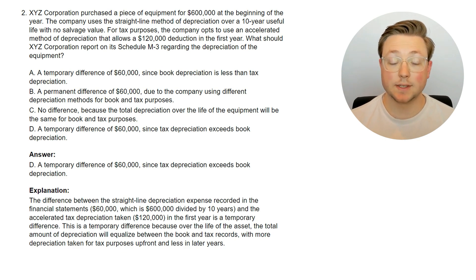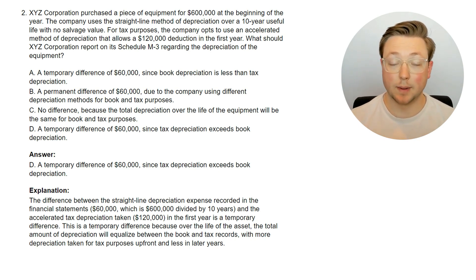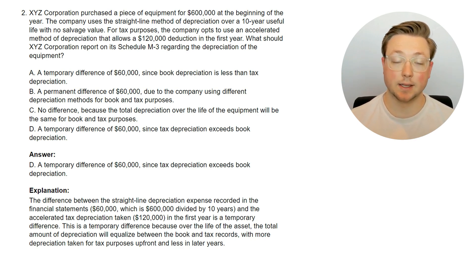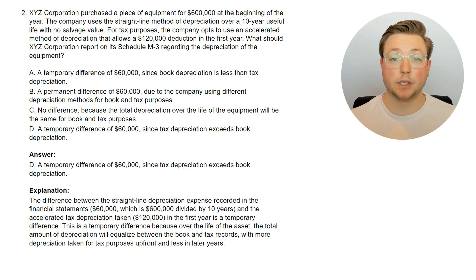The answer is a temporary difference of $60,000 since tax depreciation exceeds book depreciation. In the financial statements, straight-line depreciation was $60,000 — that's $600,000 divided by 10 years — while the accelerated tax depreciation taken was $120,000 in the first year. This is a temporary difference because over the life of the asset, the total amount of depreciation will equalize between book and tax records, with more depreciation taken for tax purposes up front and less in later years.